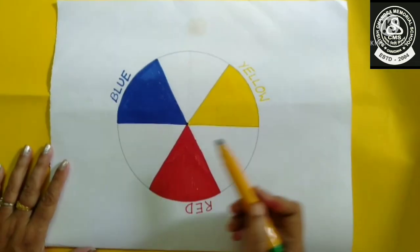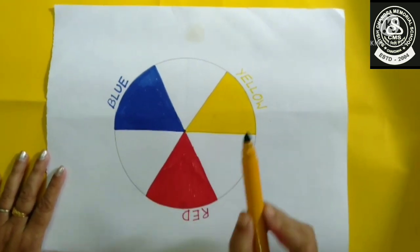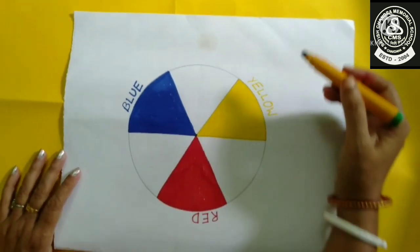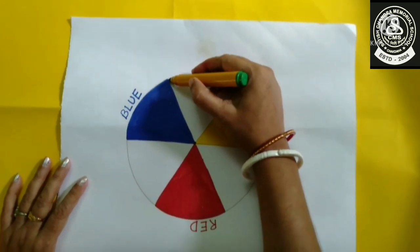So if we will mix blue and yellow we will get green, which is a secondary color.